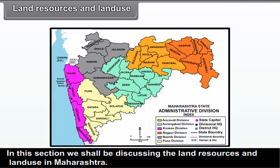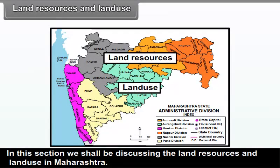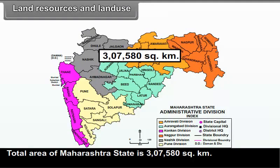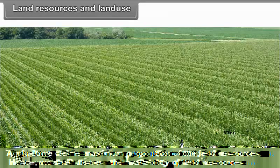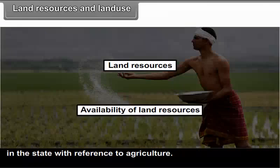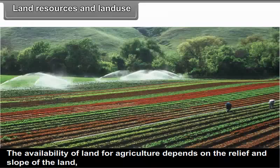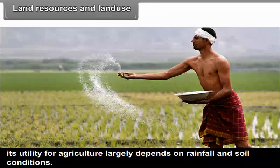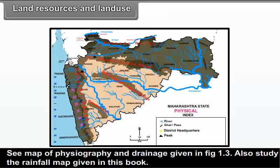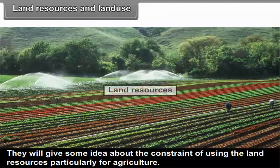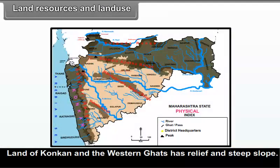In this section, we shall be discussing the land resources and land use in Maharashtra. Total area of Maharashtra state is 3,07,580 square kilometers. Agriculture claims the maximum proportion of the land resources. Hence, we shall discuss the availability of land resources in the state with reference to agriculture. The availability of land for agriculture depends on the relief and slope of the land. Its utility for agriculture largely depends on rainfall and soil conditions. See the map of physiography and drainage given in figure 1.3, and study the rainfall map given in this book.